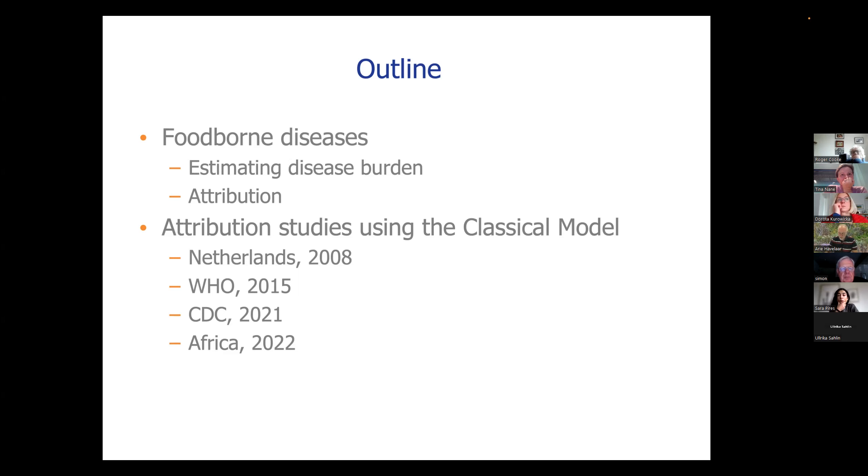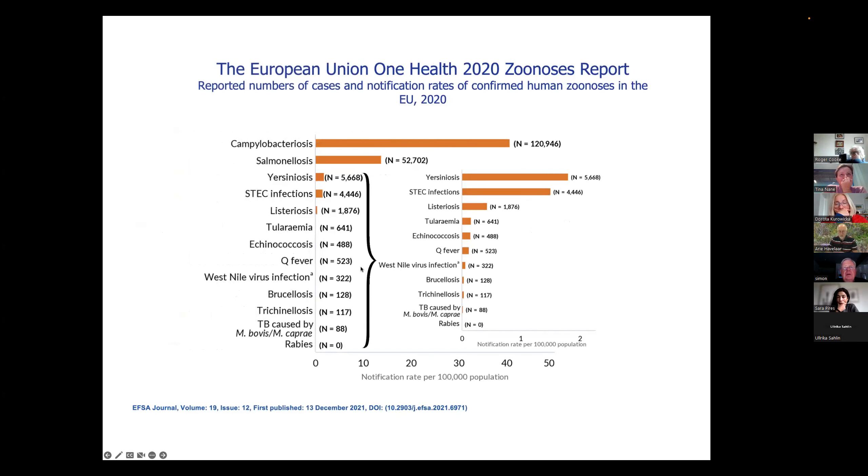So first of all, when you ask yourself the question, what is the burden of foodborne disease, you typically go to surveillance reports. This is an example, probably one of the best developed surveillance systems in the world from the European Union, who publish what I call a zoonosis report every year. And one of the first tables they always start with is to report the number of reported cases of a lot of diseases that can be transmitted through food, like campylobacter, salmonella. These days, also more diseases that are associated with food animals like West Nile virus. So they're a little bit broader these days now. But most of these diseases are considered foodborne diseases, although, and that's what we'll be talking about, they can also be transmitted through other pathways.